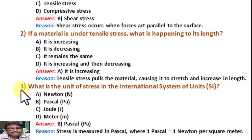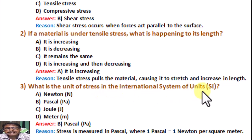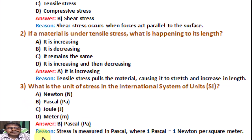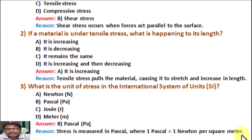Question number 3. What is the unit of stress in the international system of units (SI unit)? Option A: Newton. Option B: Pascal. Option C: Joule. Option D: Meter. Correct answer is B, Pascal. Reason: Stress is measured in Pascal, where 1 Pascal equals 1 Newton per square meter.